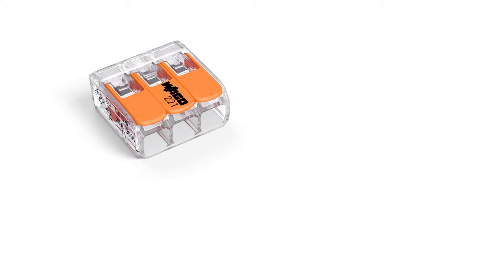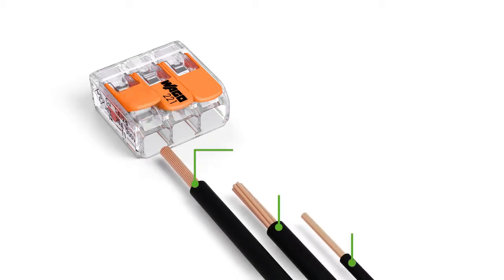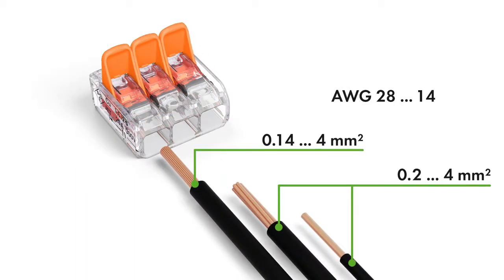The compact splicing connectors for all conductor types feature a large connection range: 0.14 to 4 square millimeters fine-stranded and 0.2 to 4 square millimeters solid and stranded, 28 to 14 AWG.